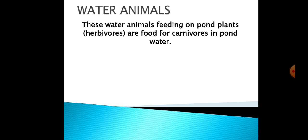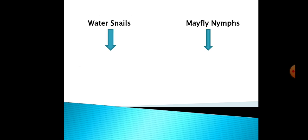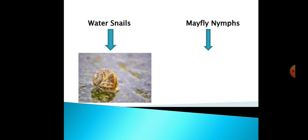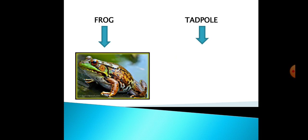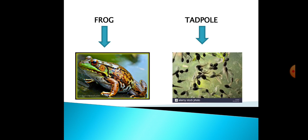Now we move to pond animals. The sequence is the same as in other habitats: plants are eaten by herbivores, and those herbivores become food for carnivores. The herbivores that feed on pond plants include water snail, mayfly nymphs, frogs, and tadpoles — newly hatched frogs also feed on water plants.